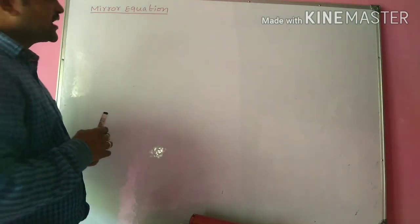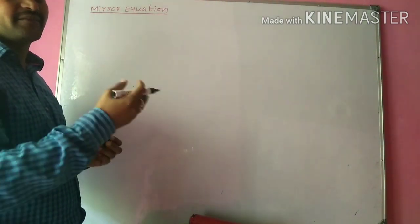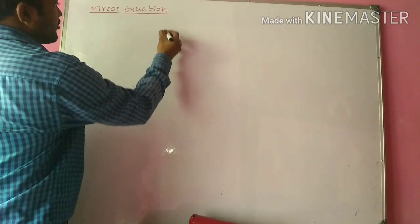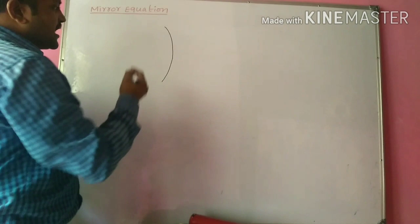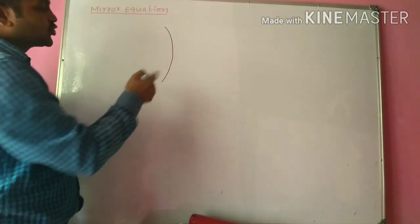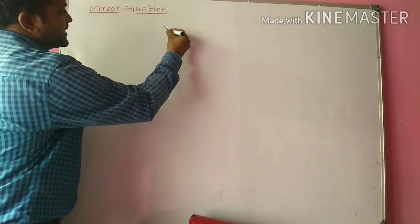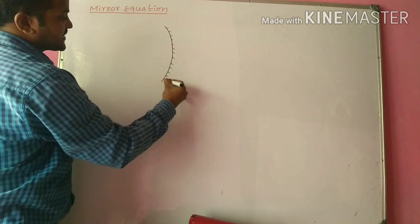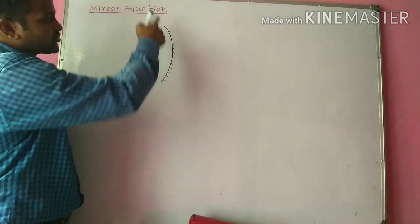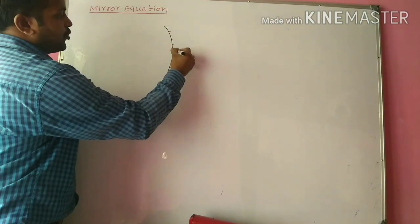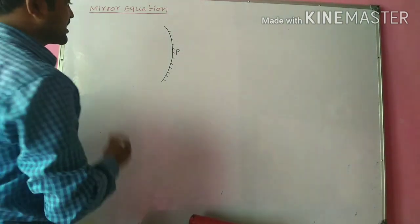Now let us consider a concave mirror. A concave mirror is a spherical mirror whose reflecting surface is towards the center of curvature. The center of curvature lies here, this is the opaque surface, and this is the reflecting surface. This is the pole P — the geometric center of the mirror is called the pole. Now let us draw the principal axis.